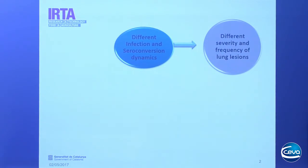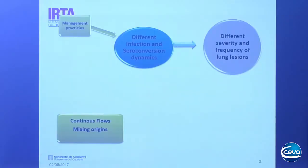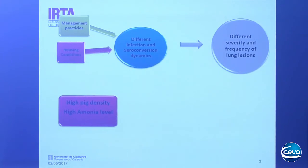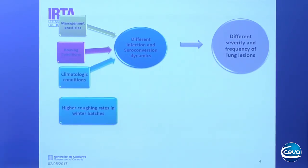There are many factors influencing different infection and seroconversion dynamics, which in consequence affect the severity and frequency of lung lesions. Management practices are the first factor — as in most diseases, they affect clinical signs and lung lesions. Continuous flow and mixing of origins trigger respiratory disease. Housing conditions also matter: high stocking density or high ammonia levels worsen the scenario. Animals reared in winter conditions show higher probability of developing respiratory disease compared to those reared in summer.